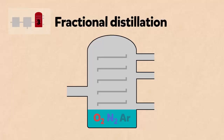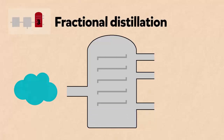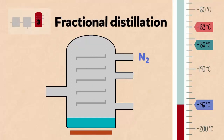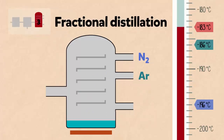Let's have a look at this process in detail. First, as we said before, the air is cooled to minus 200 degrees Celsius and passed into the fractionating column. It is then gently warmed. The temperature rises from minus 200 degrees C, and when it gets to minus 196 degrees Celsius, the nitrogen boils off and is collected. When it reaches minus 186 degrees Celsius, the argon boils off, and when it reaches minus 183 degrees Celsius, the oxygen boils off.